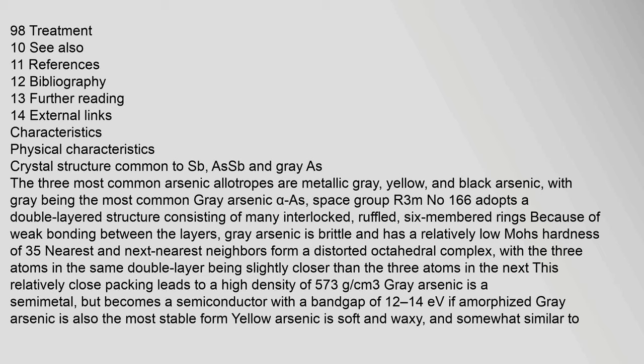The three most common arsenic allotropes are metallic gray, yellow, and black arsenic, with gray being the most common. Gray arsenic (alpha-As), space group R3m number 166, adopts a double-layered structure consisting of many interlocked, ruffled, six-membered rings. Because of weak bonding between the layers, gray arsenic is brittle.